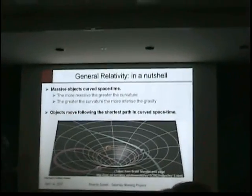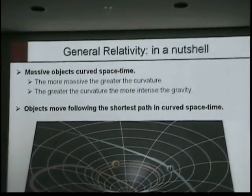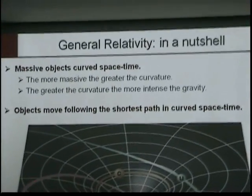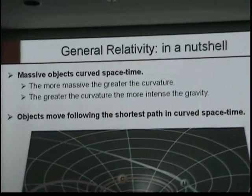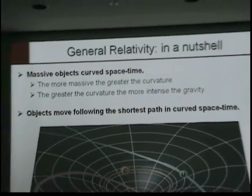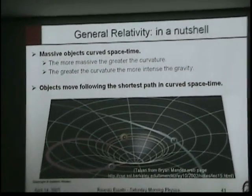So in a nutshell, massive objects curve space-time. The more massive, the greater the curvature of space-time is. The greater the curvature, the more intense the gravity. And objects move following the shortest path in curved space-time.